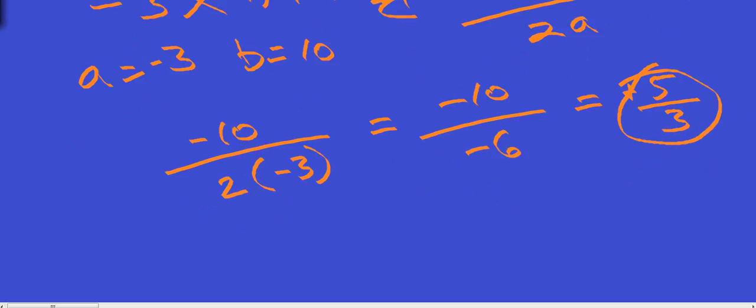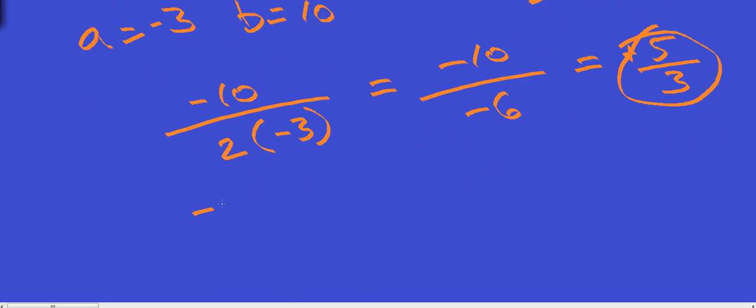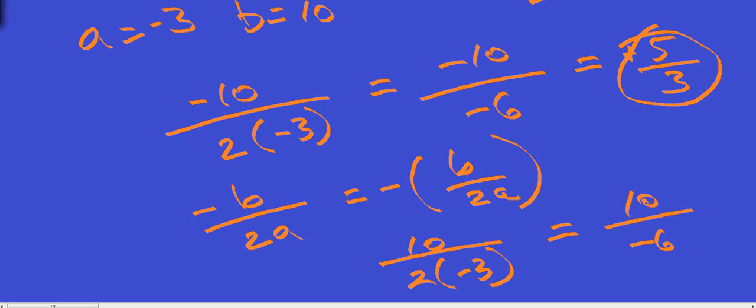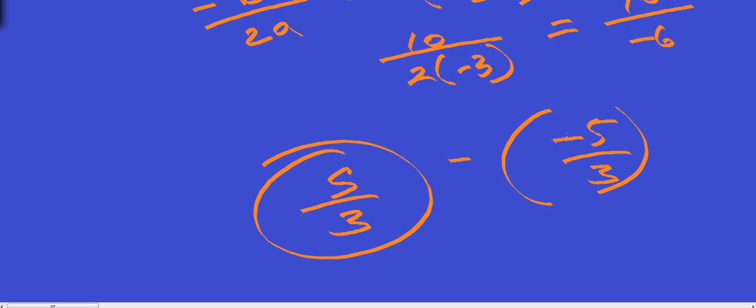Or if you did it, you could have done negative b over 2a, which is the same thing as putting your negative sign out front. So my b was 10, 2a, my a is negative 3. I've got 10 over negative 6. That reduces down to negative 5 thirds. That's my b over 2a. This negative sign is just going to take the opposite, so I still get 5 thirds. Either way, you get the right answer.